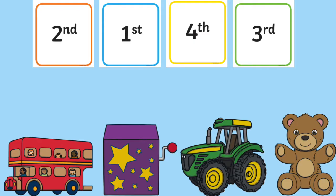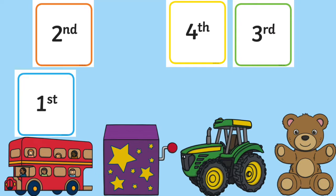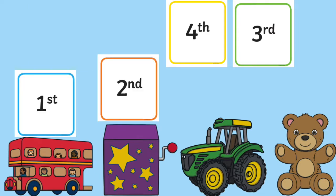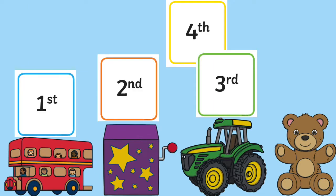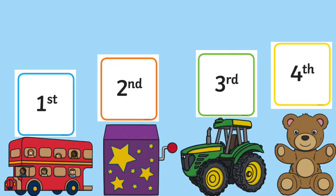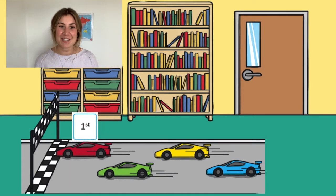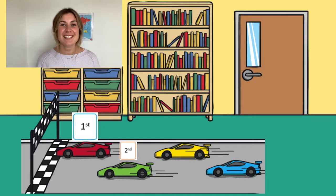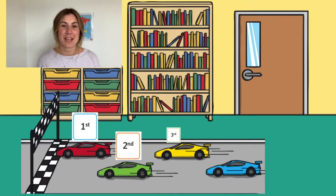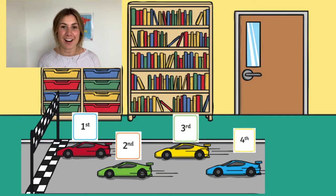You could also get your children to line up some toys and see if they can put the ordinal cards in the correct order. You might want to get your children to have a race using toy cars and see if they can discuss which cars came in which place — for example, the red car came first.